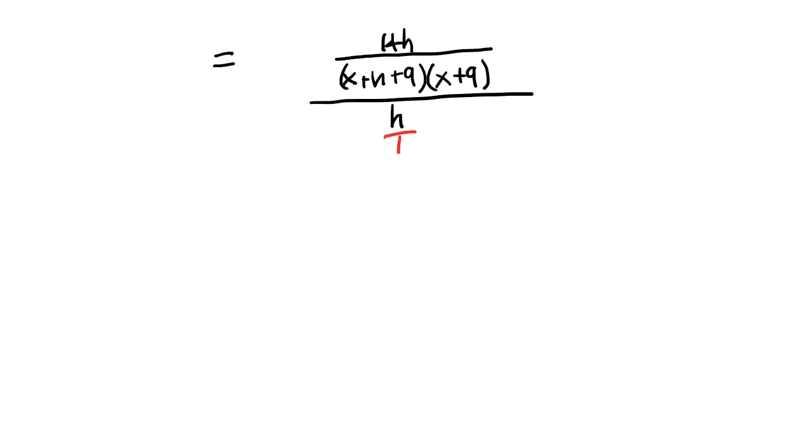So the next step is pretty straightforward. We have 14h over our common denominator, x plus h plus 9 times x plus 9. And when we do the multiply by the reciprocal, sometimes called copy-flip, that's 1 over h. I notice that I can have a factor of h in the numerator and a factor of h in the denominator. So that's going to actually factor out to be 1.